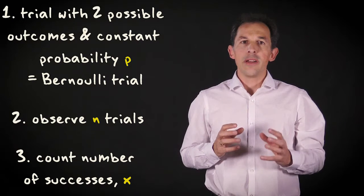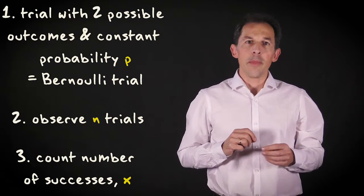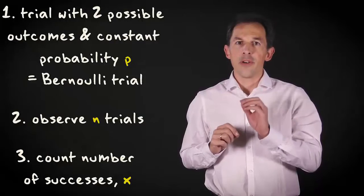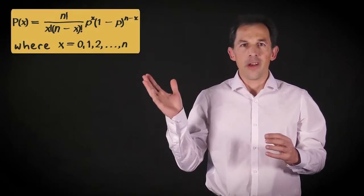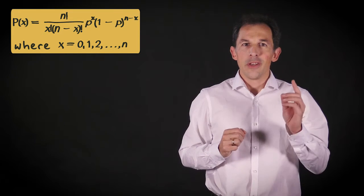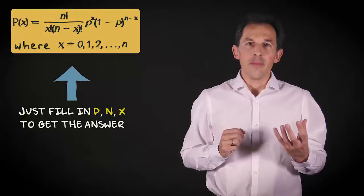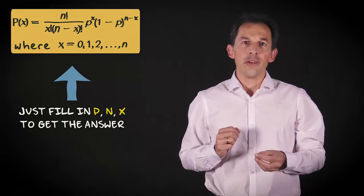These three elements are combined in one formula that gives the probability of getting a particular number of successes with n trials. The formula is shown here. You can just fill in the three numbers, n, x and p, to get the answer.